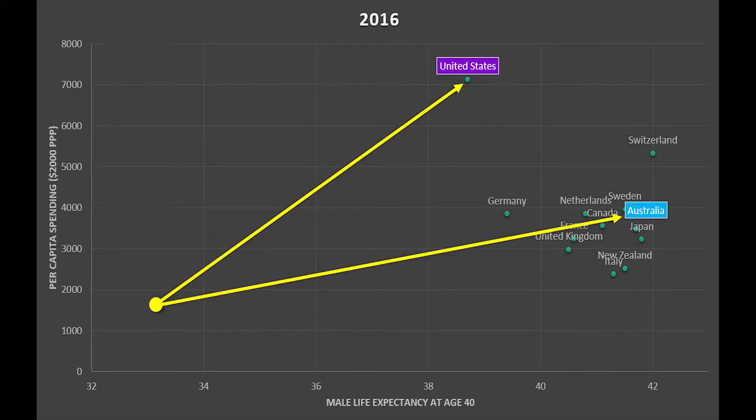The problem is that other countries are getting more and more and spending less. So they're doing better than we are in terms of both the cost metric and the outcome metric. They're doing better on both cost and outcome. This is the big challenge for U.S. health policy. What is going on? Because we looked the same in 1976.